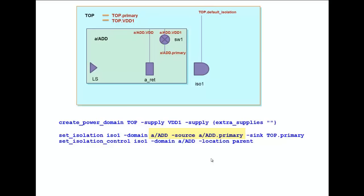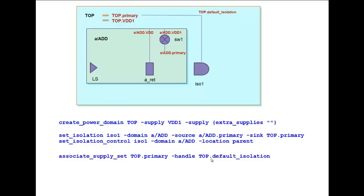We now associate the Top.DefaultIsolation to Top.Primary and now we associate the Block Level A slash VDD1 to Top.VDD1 and A slash add.VDD to Top.Primary.